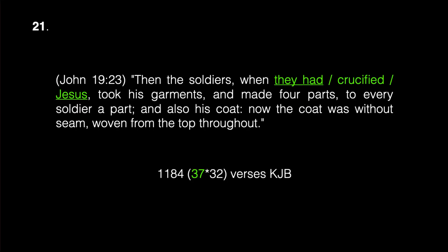The twenty-first occurrence of crucified is in John 19:23 — there's 23: 'And the soldiers, when they had crucified Jesus, took his garments and made four parts, to every soldier a part, and also his coat. Now the coat was without seam woven from the top throughout.' The phrase 'they had' — case sensitive — the word 'crucified,' and the name 'Jesus' — case sensitive — combined appear in 1,184 verses of the King James Bible, a multiple of 74.